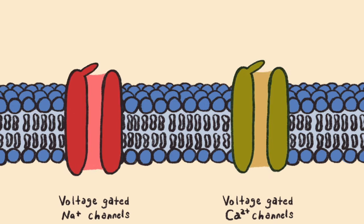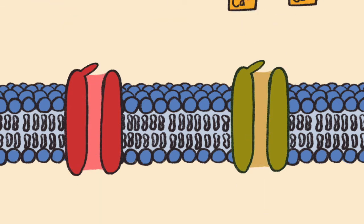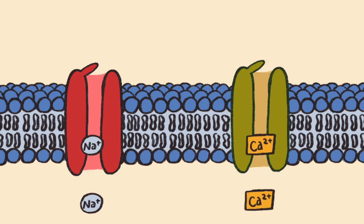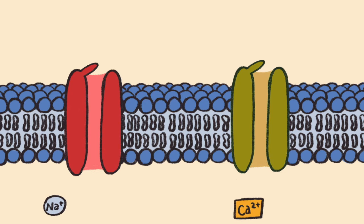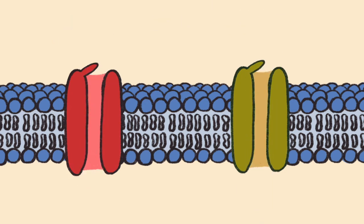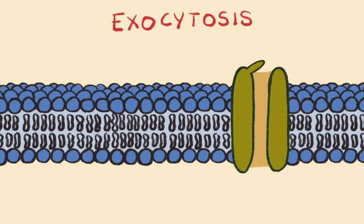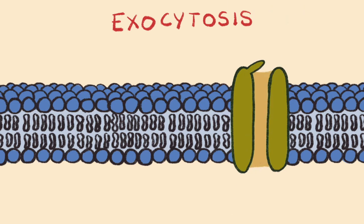As sodium and calcium ions flow down their electrochemical gradient into the neuron, this triggers the vesicles containing thousands of a particular neurotransmitter to approach the presynaptic membrane of the axon terminals. The increased calcium concentration in the presynaptic axon terminals also plays an important role in the exocytosis of the neurotransmitters into the synaptic cleft, something I will show you in a few minutes.